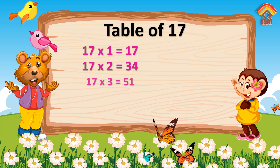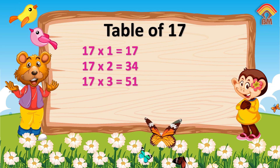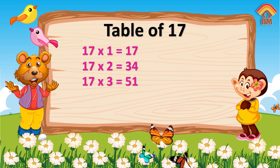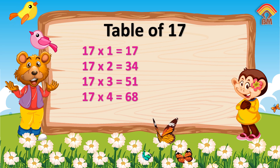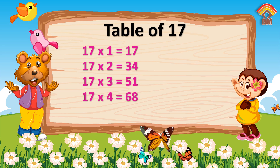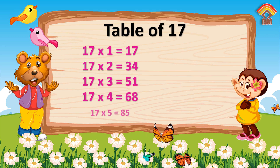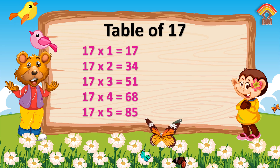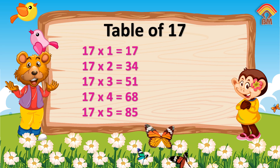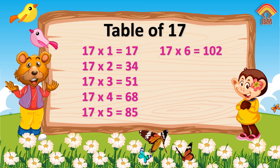Seventeen three's are fifty-one. Seventeen four's are sixty-eight. Seventeen fives are eighty-five. Seventeen six's are one zero two.